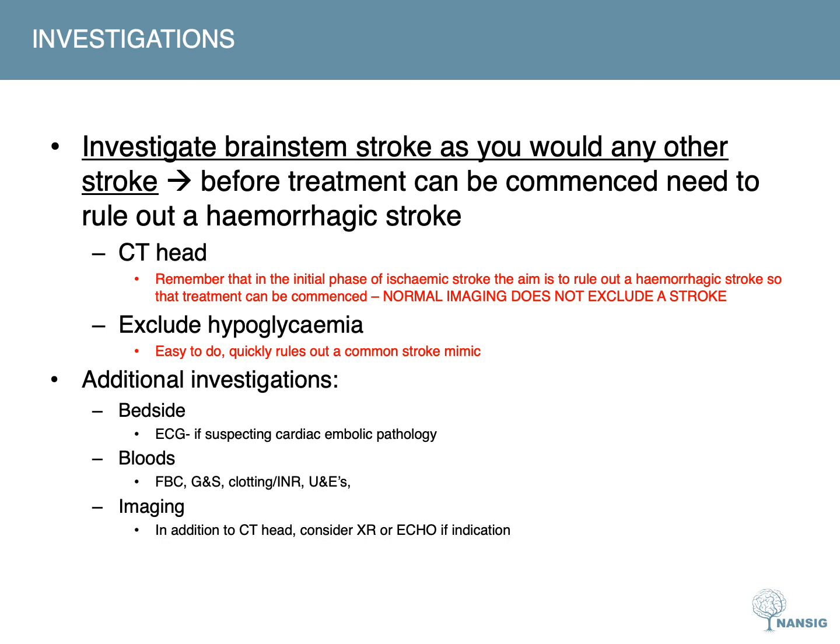For bloods: full blood count, group and save, clotting, INR — the usual panel. For imaging, in addition to the CT head, consider a chest X-ray or echocardiogram if there's indication of alternative pathology or you're looking for something specific.